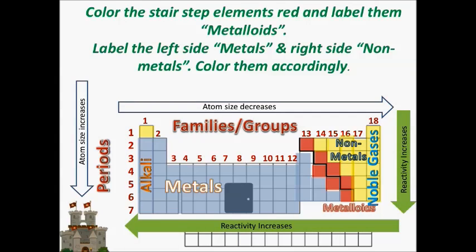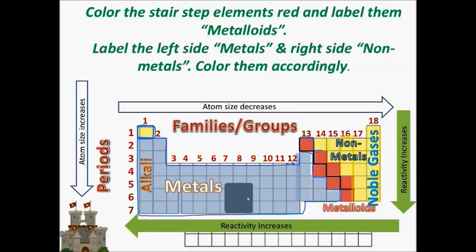Now we get into the different categories of elements on the periodic table. The largest category is metals — notice that hydrogen, even though it's on the metal side, is not considered a metal. Metals take up the vast majority of the table because there are more metals than anything else. Then you have metalloids, which sit on the stair-step line, and non-metals. Go ahead and section off these groups on your periodic table and label metals, non-metals, and metalloids.